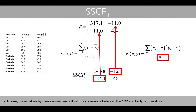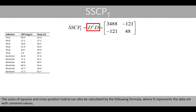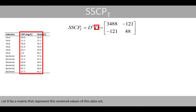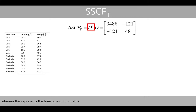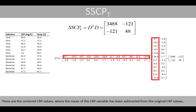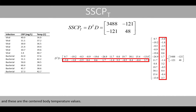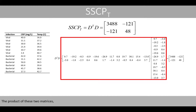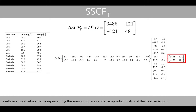By dividing these values by n minus 1, we get the covariance between CRP and body temperature. The sums of squares and cross-product matrix can also be calculated by the formula where D represents the data set with centered values. Let D be a matrix of centered values, and D-transpose be the transpose of this matrix. We can then calculate the sums of squares and cross-product matrix for the total variation. These are the centered CRP values, where the mean CRP has been subtracted from each individual CRP value, and these are the centered body temperature values. The product of these two matrices results in the 2×2 sums of squares and cross-product matrix.